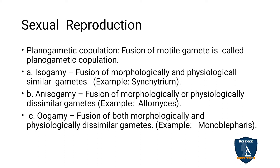Isogamy means fusion of morphologically and physiologically similar gametes — their shape, structure, and function are the same. Example: Synchytrium. Anisogamy is the fusion of morphologically or physiologically dissimilar gametes — they may be externally or functionally different (any one type). Example: Allomyces.